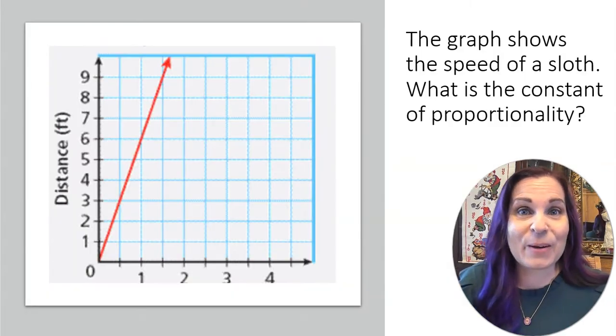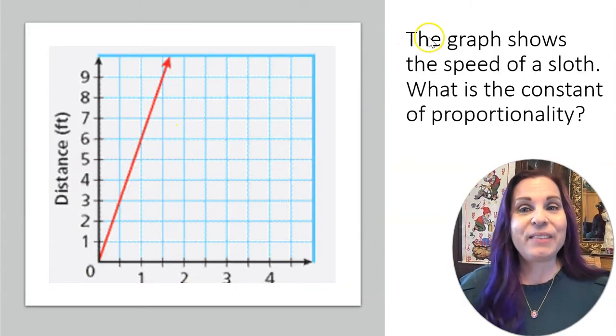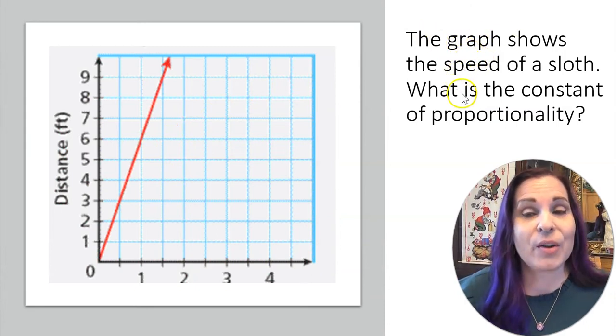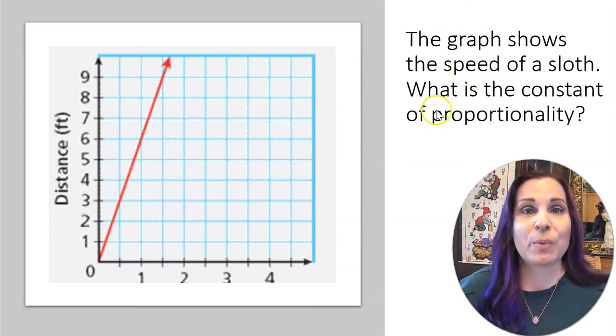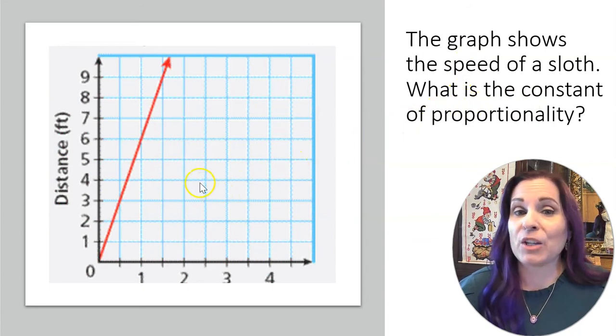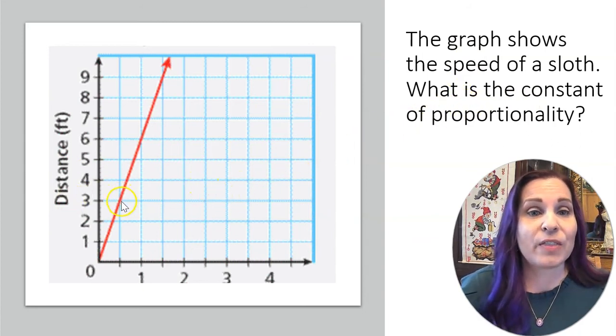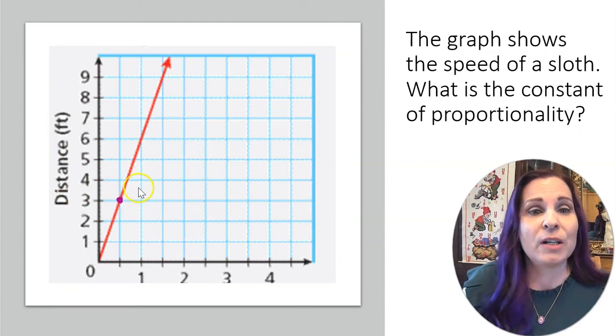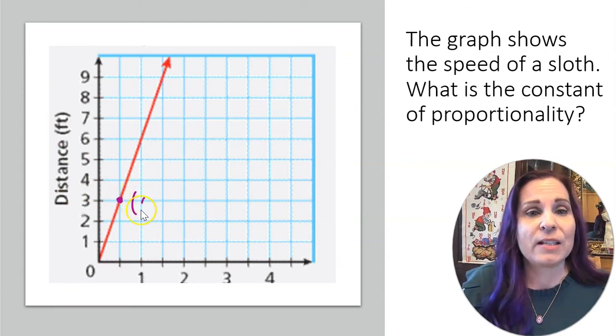Let's keep going. How about a graph? The graph shows the speed of a sloth. What is the constant of proportionality? You can pick any point on this line where you can clearly see what the values are. Like here, we've got 0.5 and 3. Then there's another point here, and that point is 1, 6.